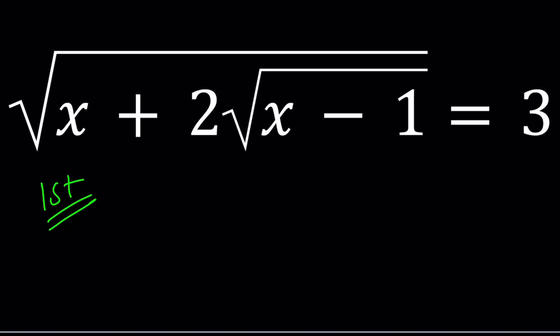For my first method, I want to do what is usually done, the standard method: square both sides. When we square both sides, the outer square root is going to cancel out with the square. We're going to end up with x plus 2 times the square root of x minus 1 equals 3 squared, which is 9.